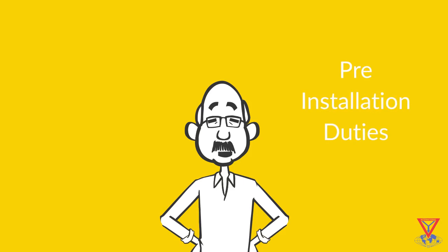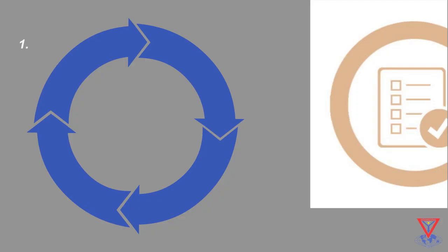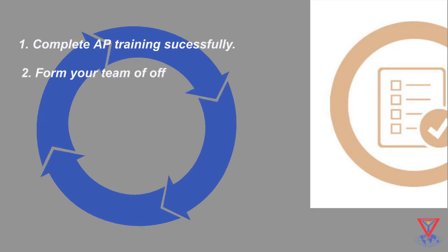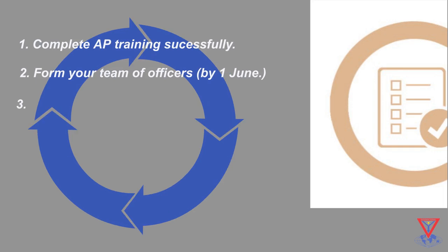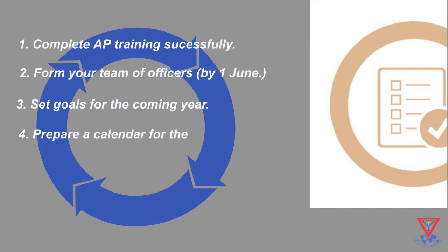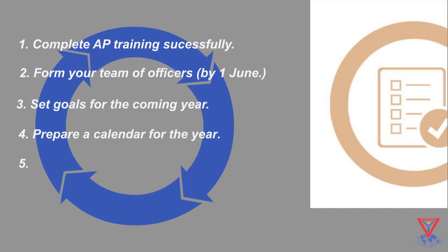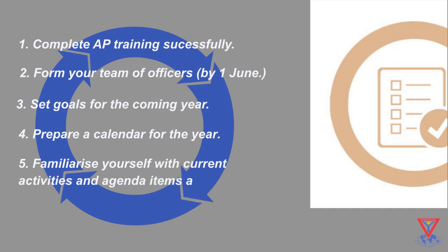Pre-installation duties: 1. Complete DG training successfully. 2. Form your team of officers by the 1st of June. 3. Set goals for the coming year. 4. Prepare a calendar for the year. 5. Familiarize yourself with current activities and agenda items at the club and regional levels.